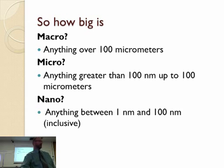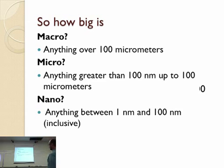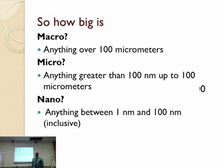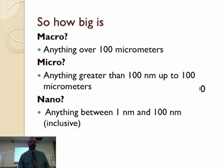So how big is it? Macro is anything over 100 micrometers. Micro is anything above 100 nanometers and less than 100 micrometers — or microns, or micrometers, same thing.